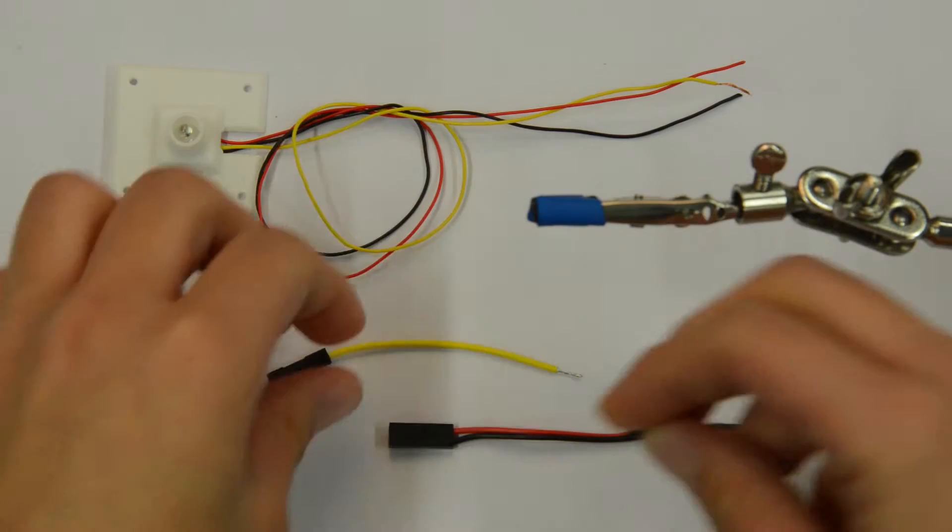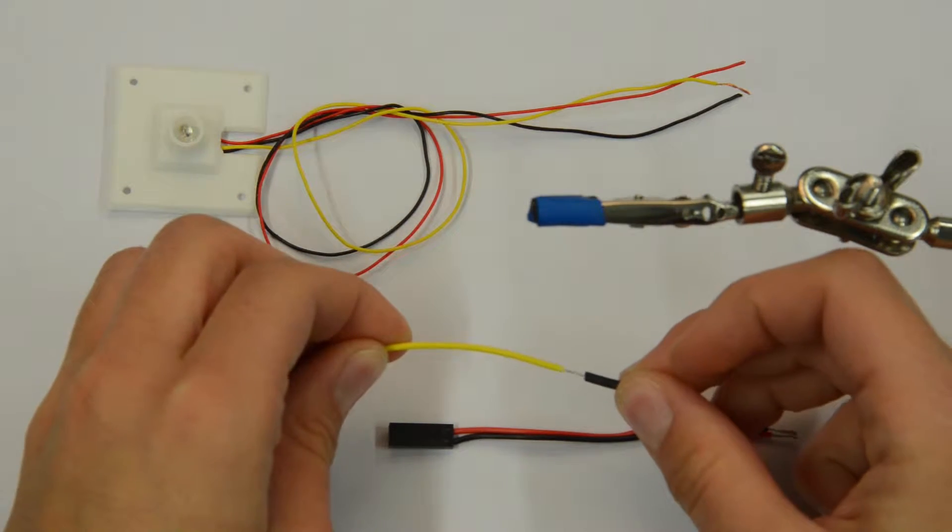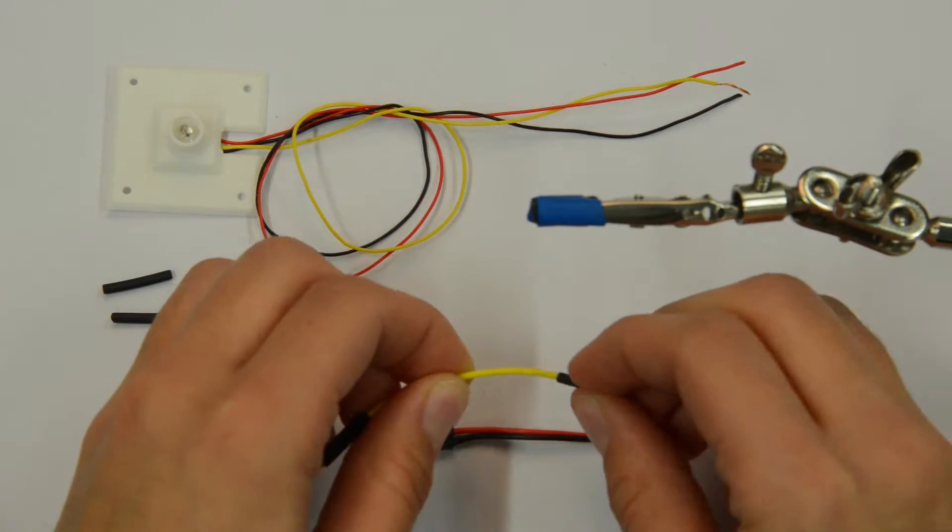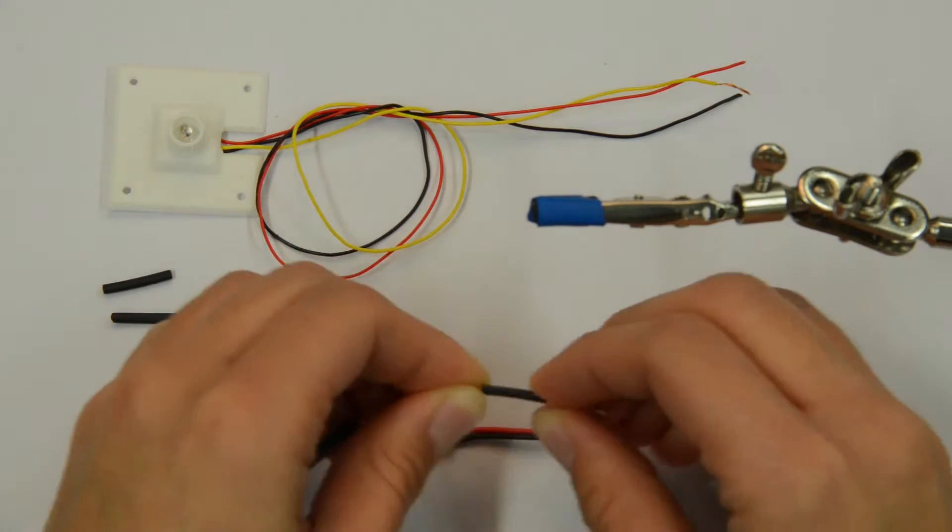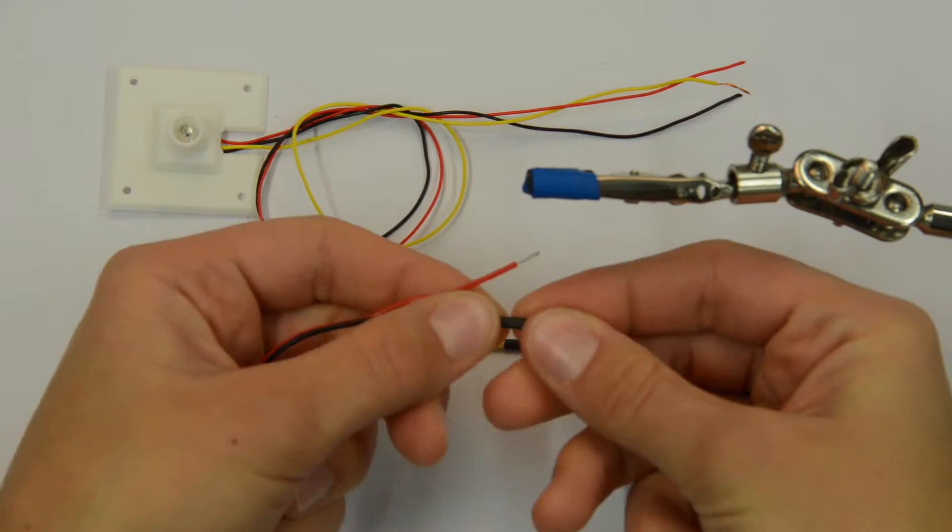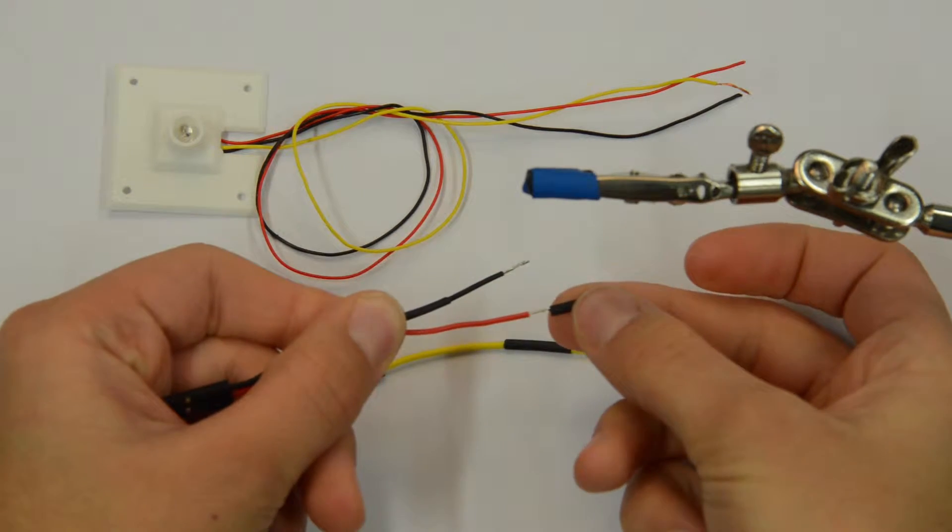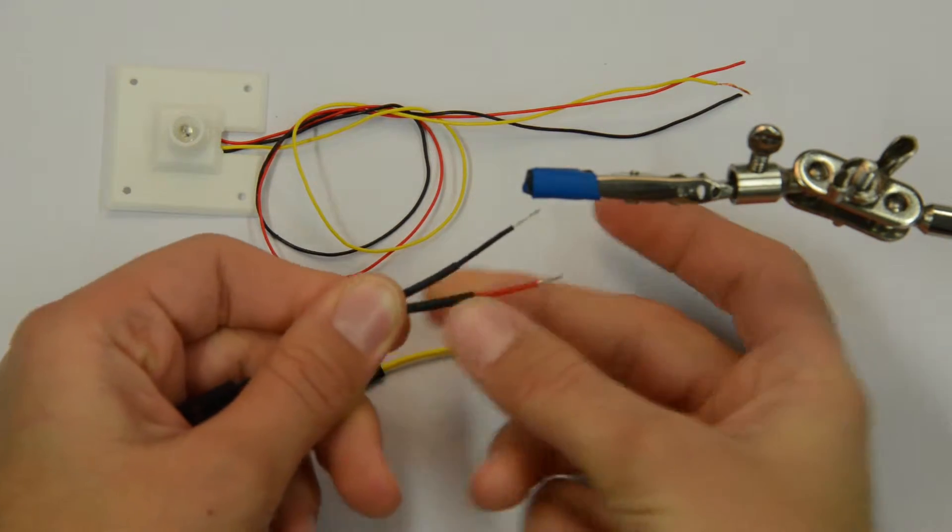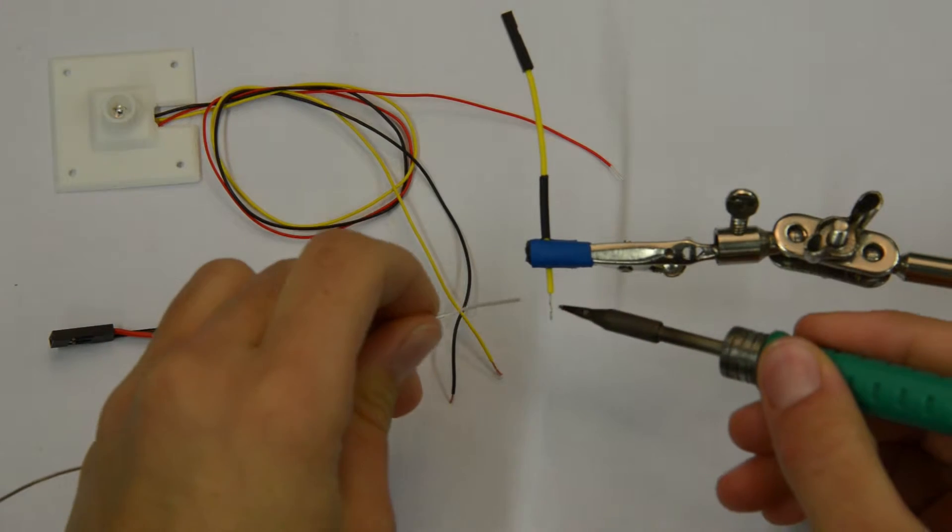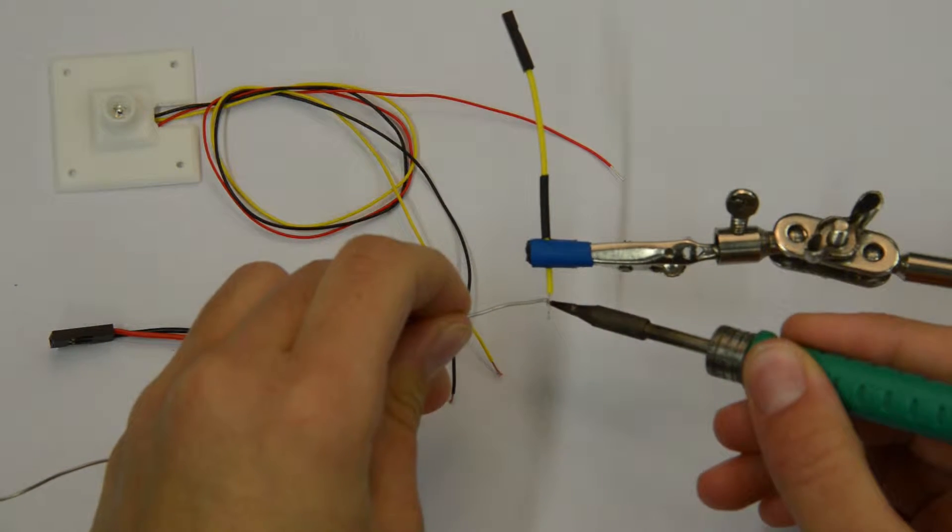Begin by putting heat shrink on all of the wires. Then pre-tin them and connect them together.